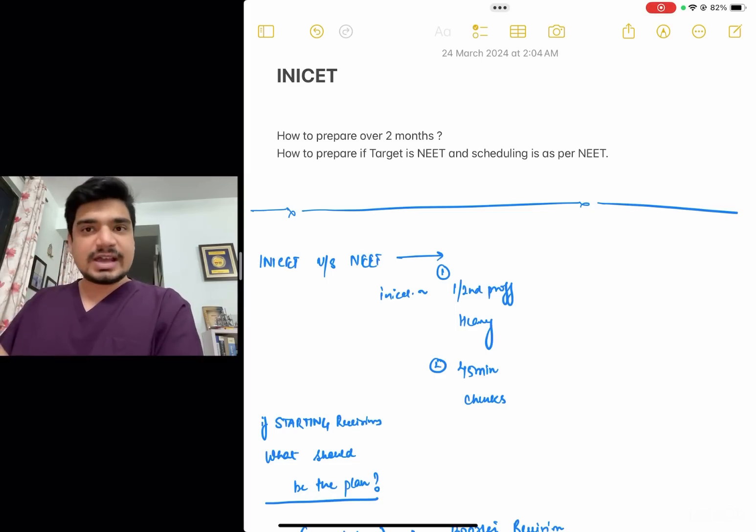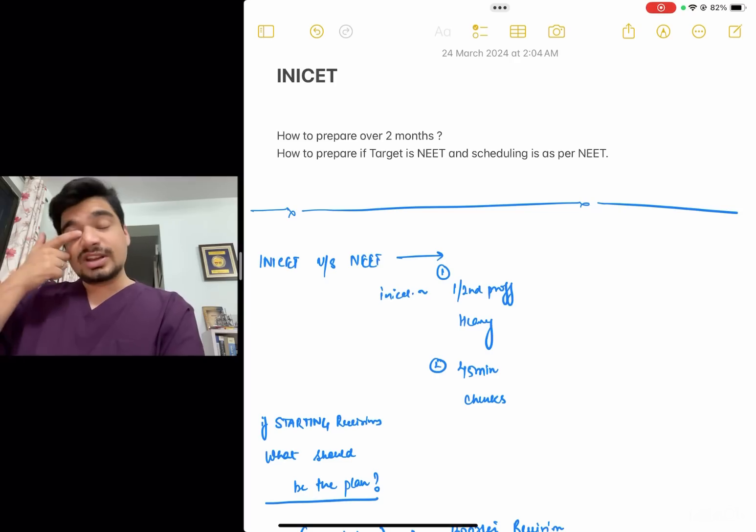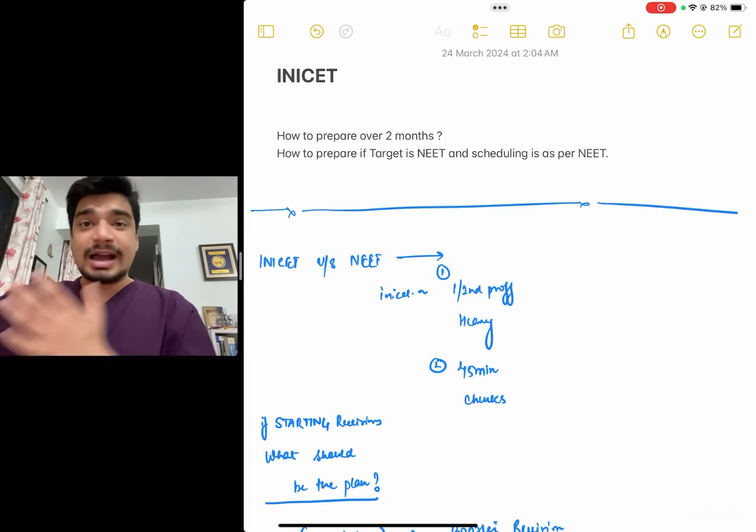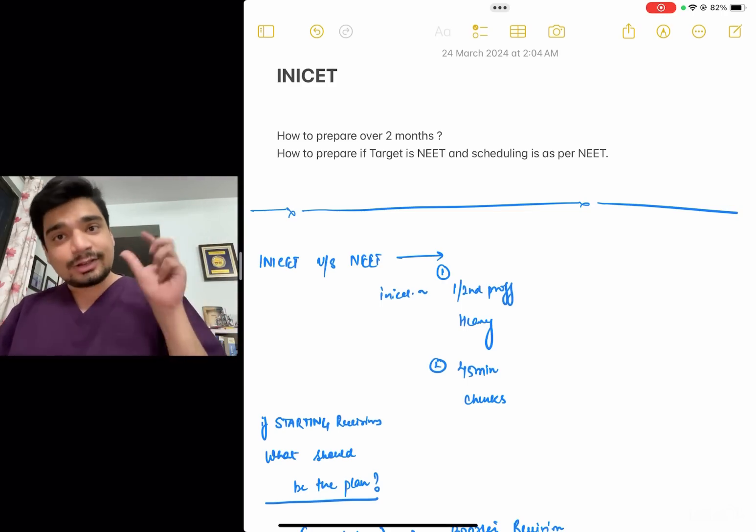If you look at the questions in the past five years, the pattern has stayed exactly the same. They don't ask core medicine questions. Nobody's going to ask you the treatment algorithm of Parkinson's disease. Nobody's going to ask you the treatment algorithm of, for example, Alzheimer's or some other random IBD or something on those lines.